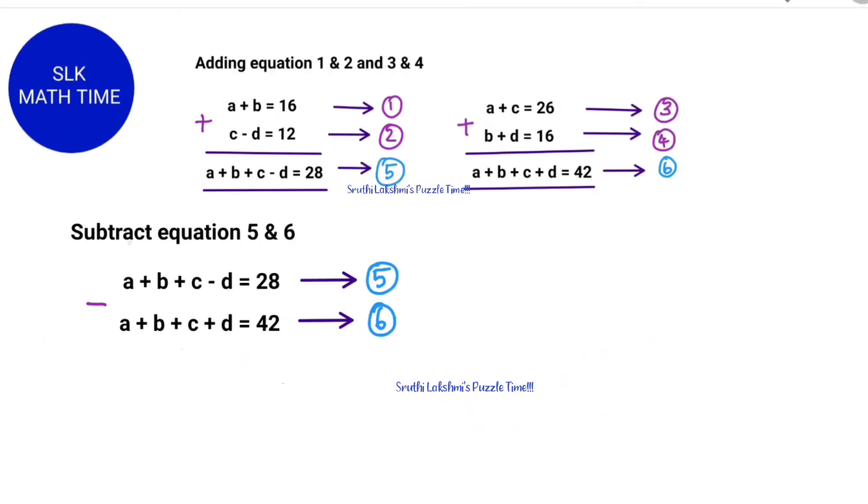So now we have to subtract equations 5 and 6. A minus A is 0. Next B minus B is again 0. C minus C is 0. So minus D minus plus D is minus 2D.